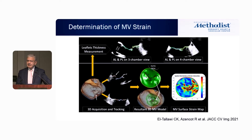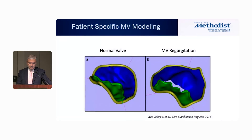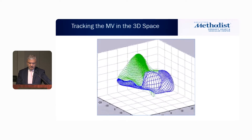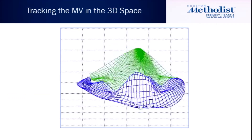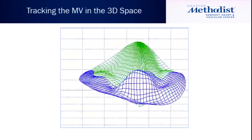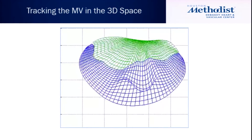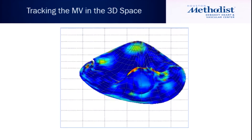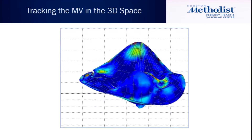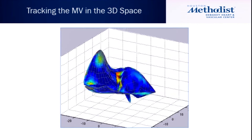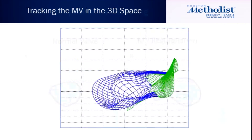Basically what we did is use the best imaging modality in time and space — measuring strain and having a heat map of strain. These are 3D models of a normal and abnormal valve, and this is tracking the mitral valve in systole.